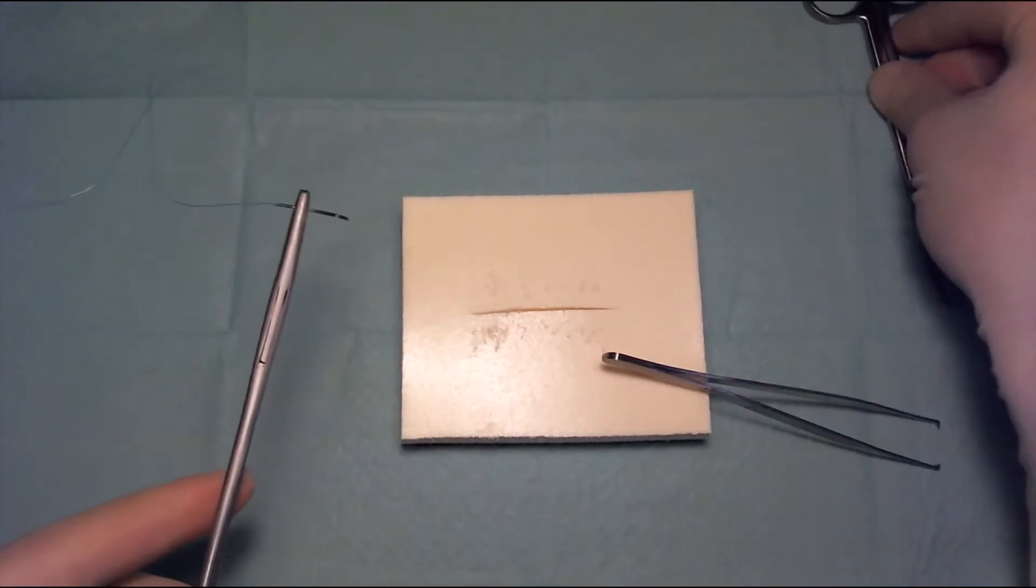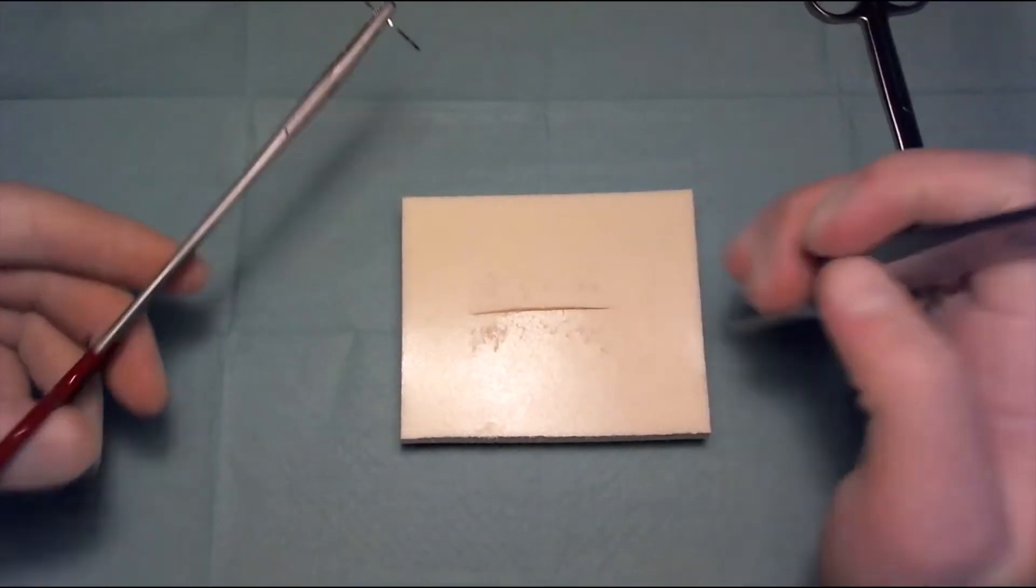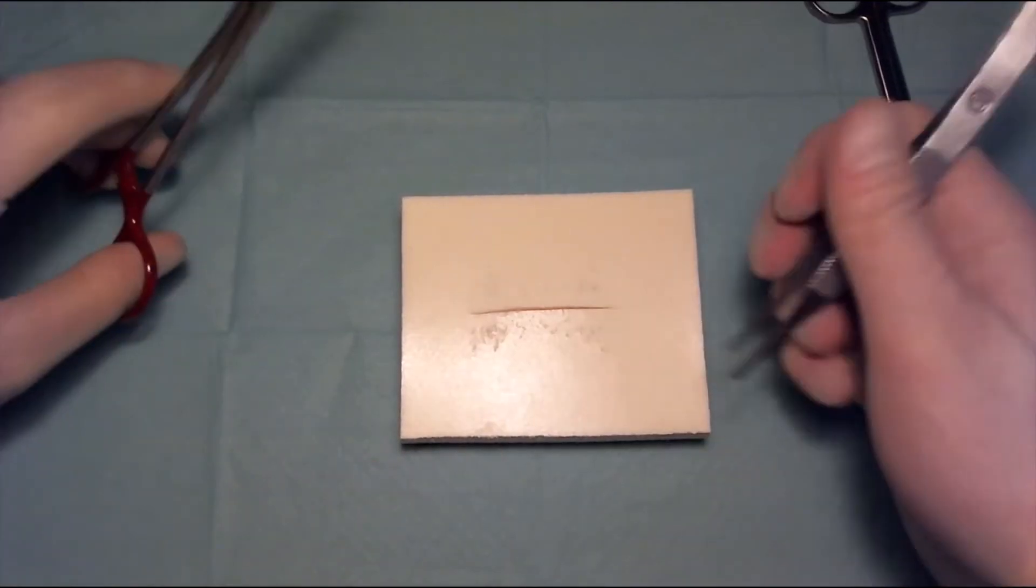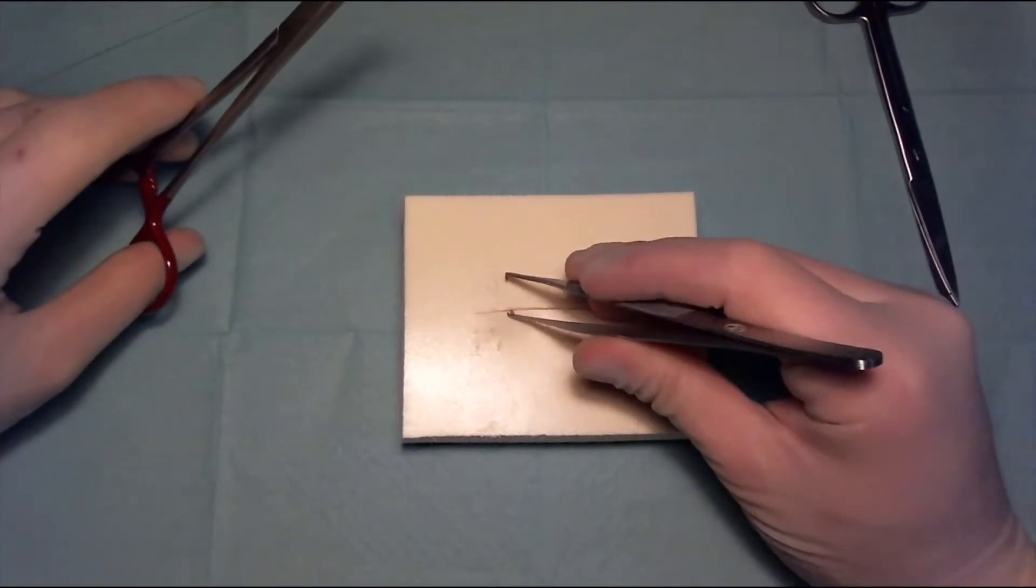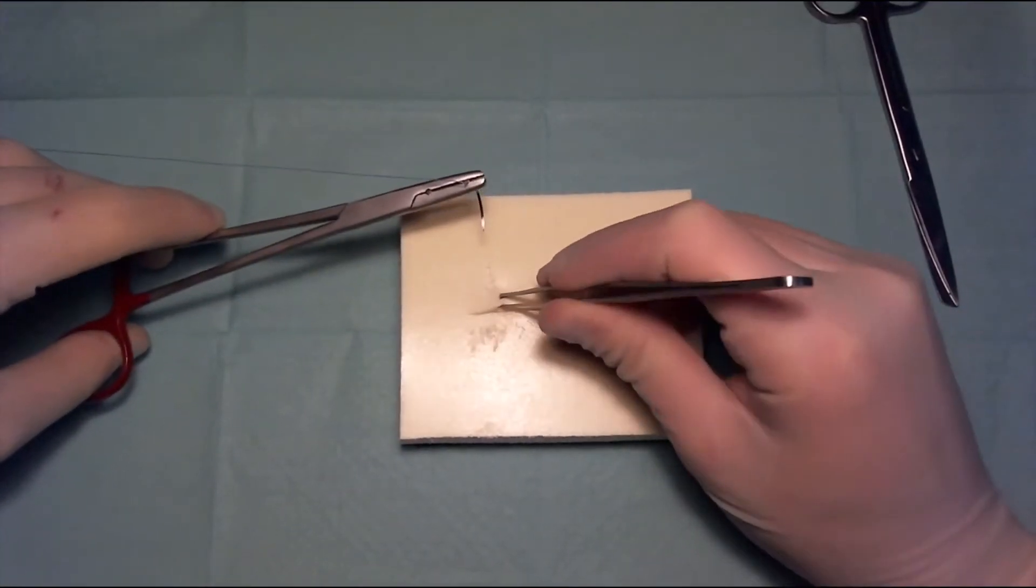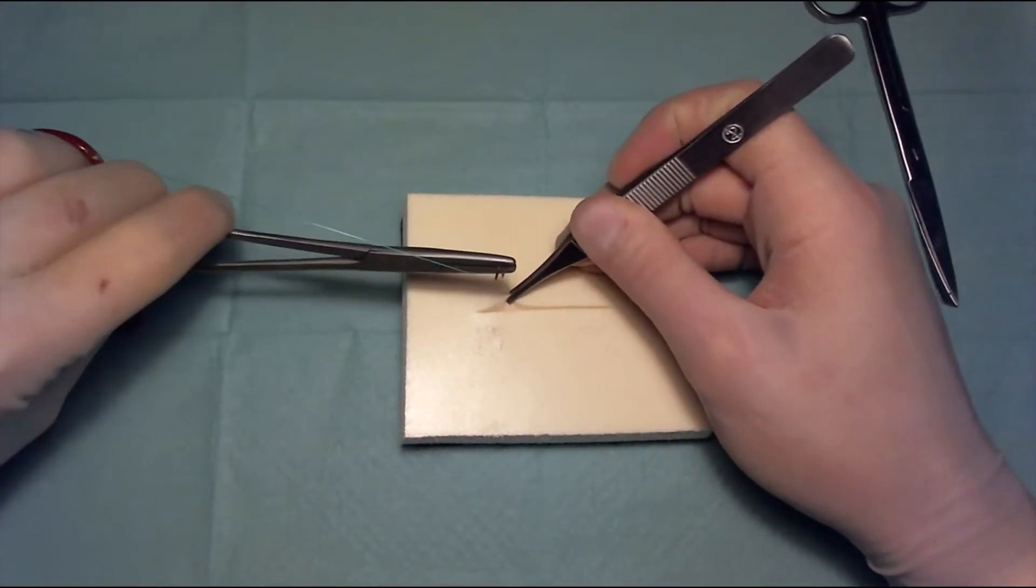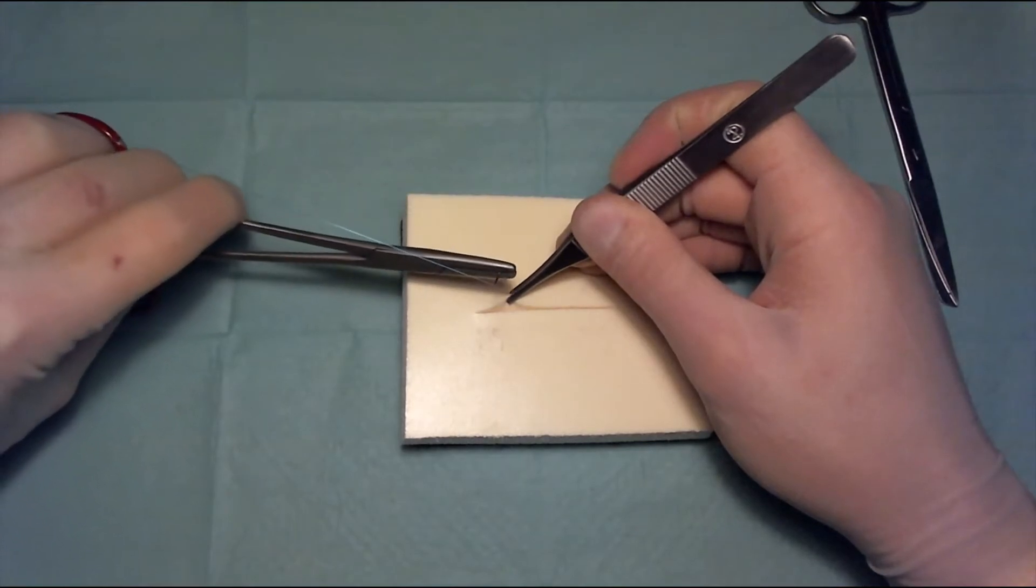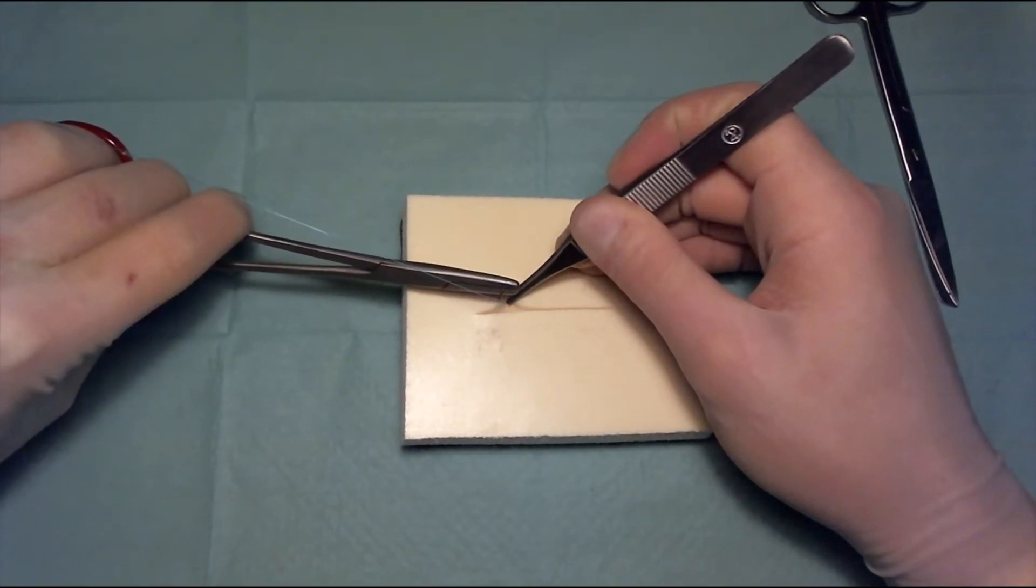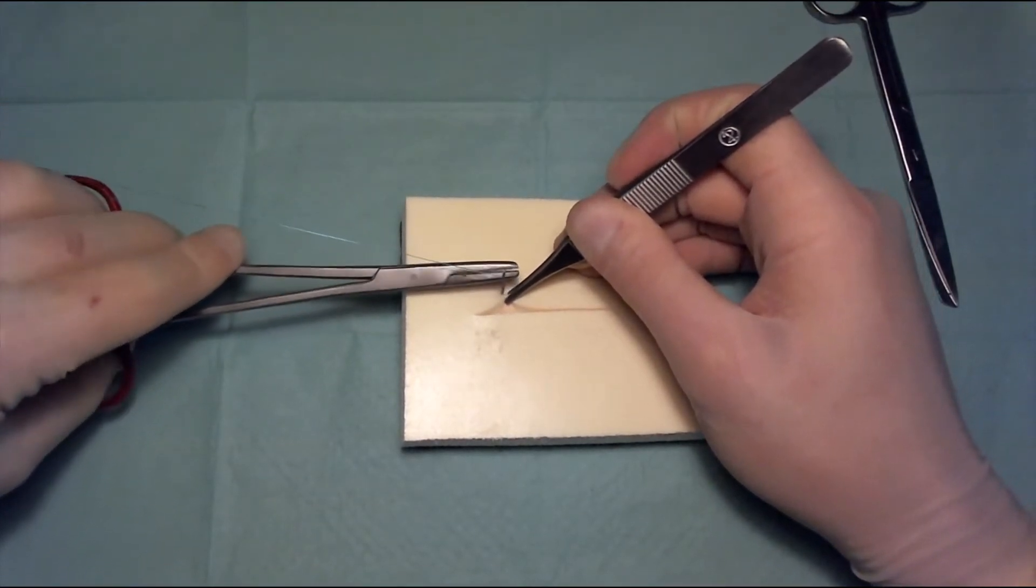So once all of that is in place we can start with our suture, and we're going to start with everting the skin and we're going to grasp it with our surgical forceps, evert it, and you're going to put the needle in a perpendicular fashion into the skin, and once you're inside you can supinate your wrists.